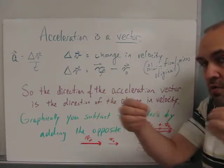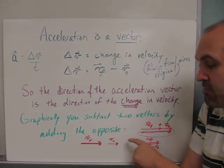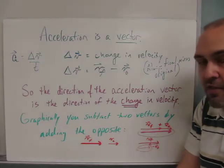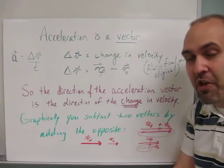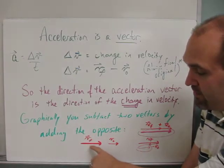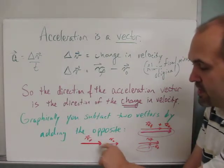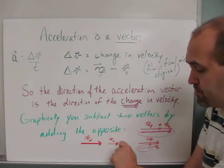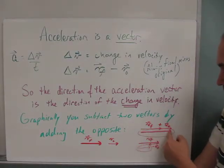Graphically, if you were drawing arrows to represent your vectors, you would subtract 2 vectors by adding the opposite. If I was going to add vf, the final velocity, and vo - notice that the velocity is increasing. If I just added those together, I would add them tip to tail and get a big long vector that way.